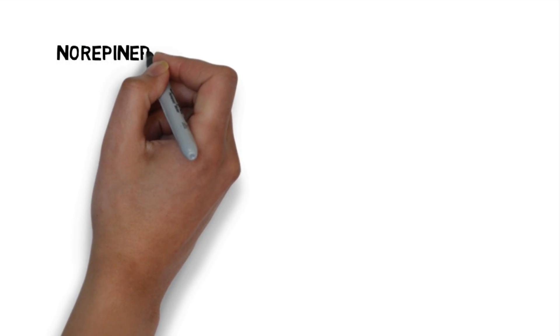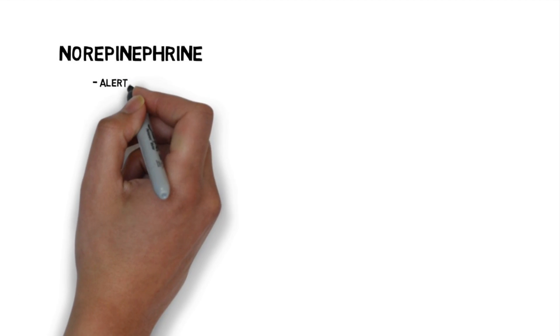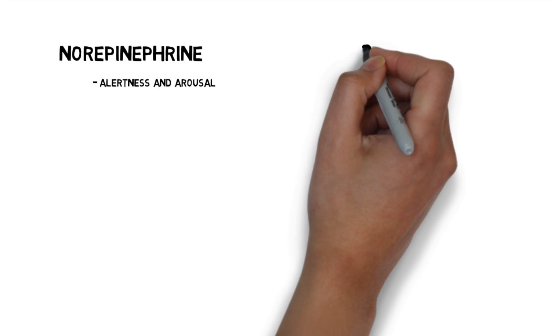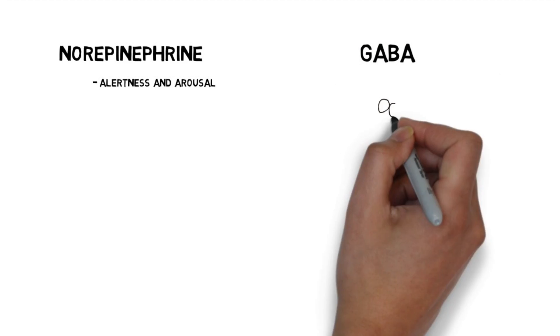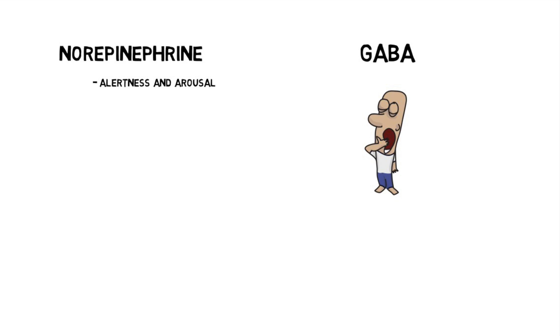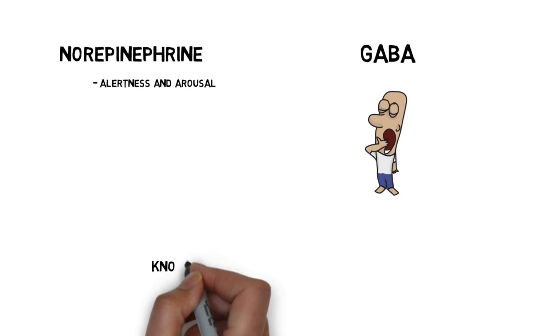We can do a couple more quick. We have norepinephrine, which is involved in alertness and arousal. Lack of it has been also linked to depression. We also have one called GABA. GABA really deals with sleep issues. Those six are probably the only ones you'll see on an intro to psych exam.